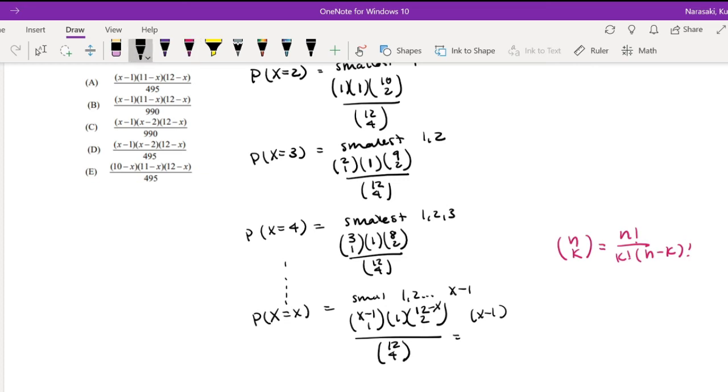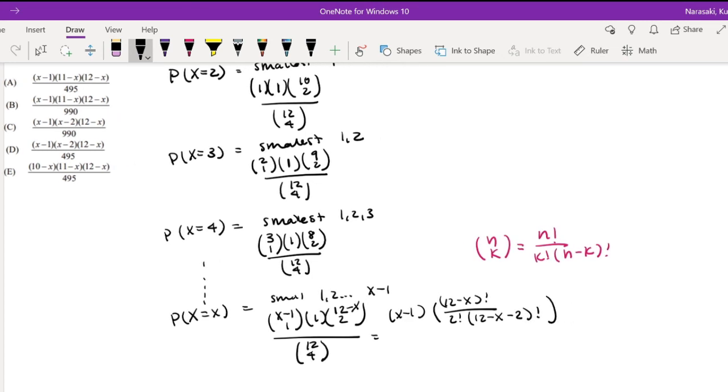And then when we break this down into our formula, n for us is 12 minus x, so this is 12 minus x factorial divided by k factorial, which is 2 factorial for us. n minus k factorial is 12 minus x minus 2, which is also equal to 12 minus x factorial over 2 factorial times 10 minus x factorial, right?